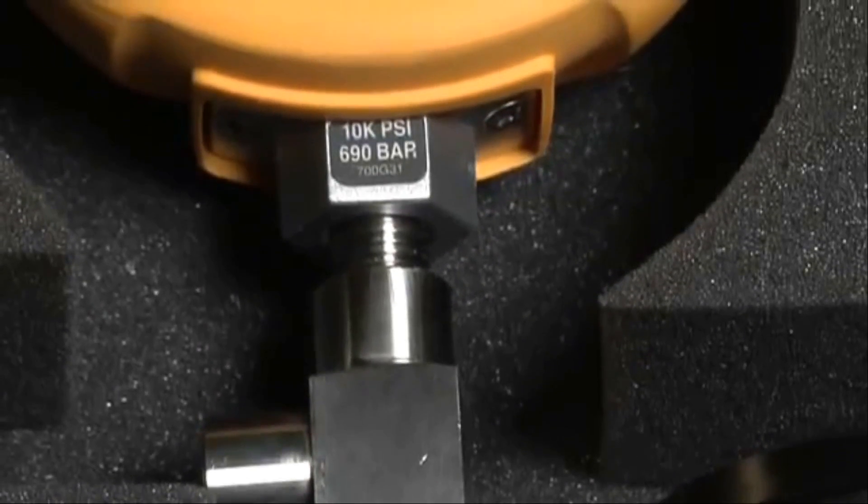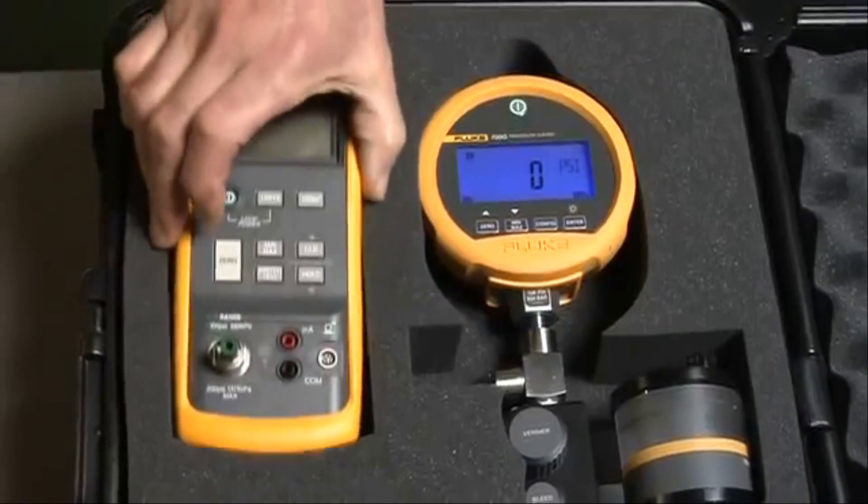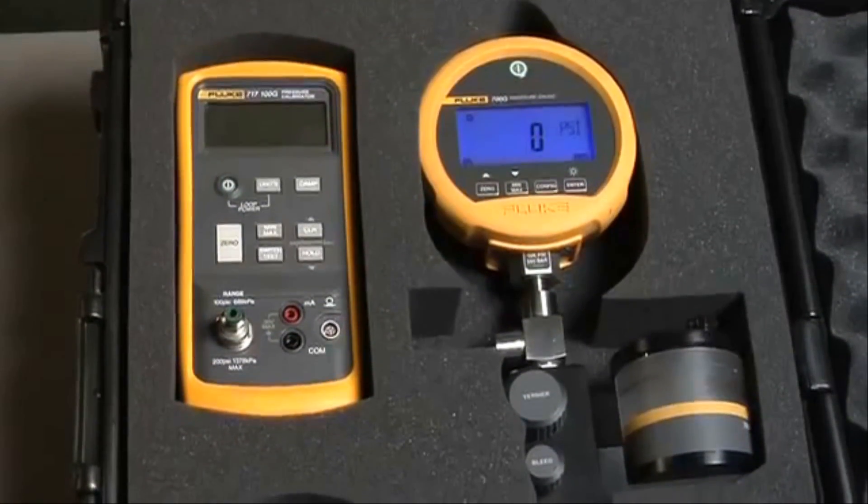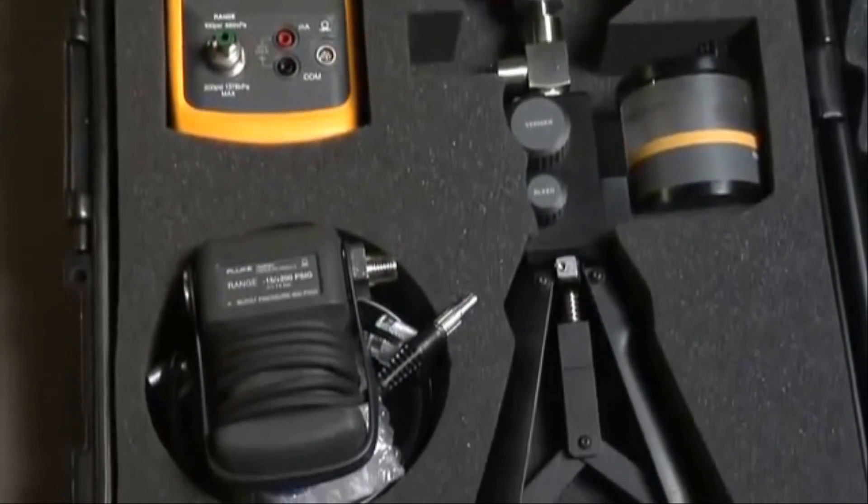Leave the test gauge attached to the pump and store safely in the kit's protective hard case. These kits can also be used with Fluke 717 pressure calibrators and 700 series pressure modules.